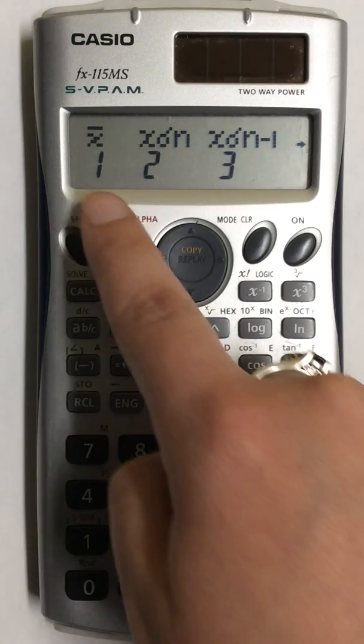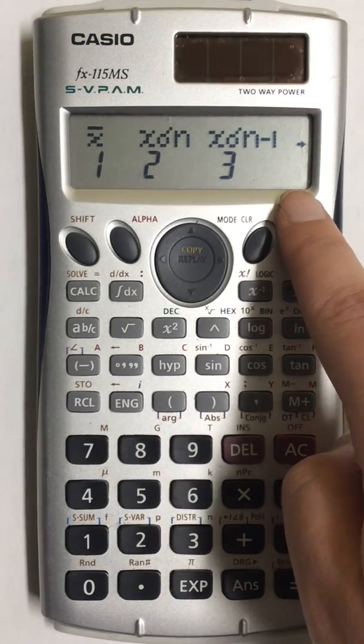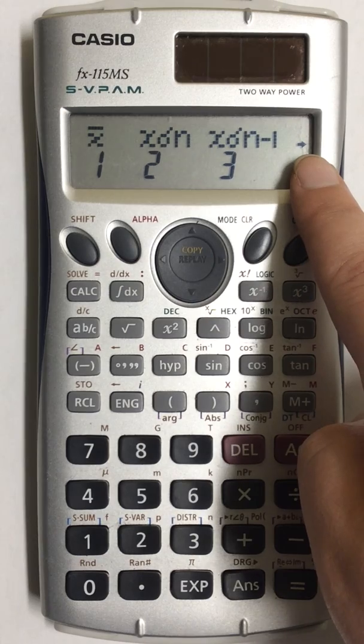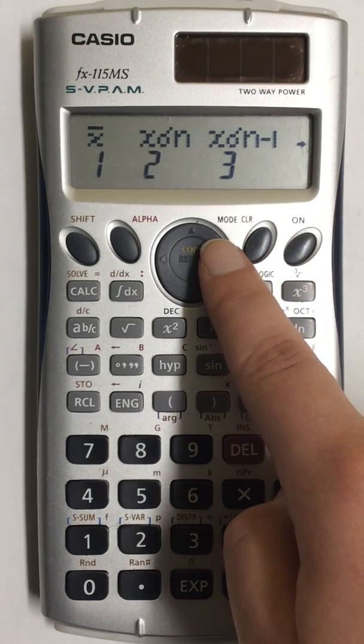You have your mean and standard deviation that show on the screen but also an arrow off to the side that shows you have more values off to the right. So to find those press the right arrow.